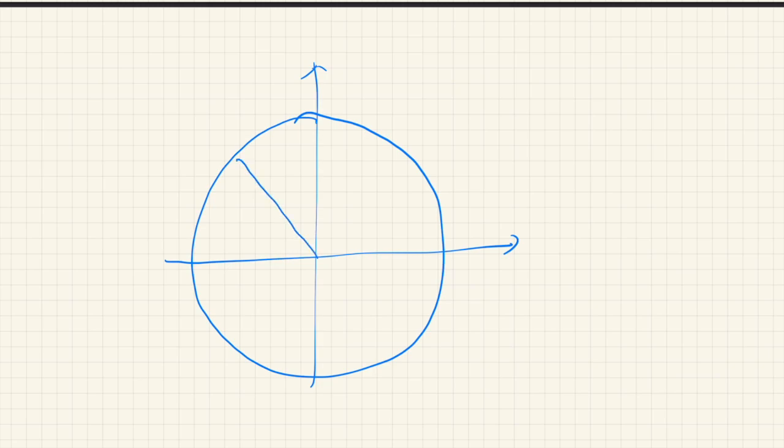Let's consider a unit circle. Unit circle means its radius is 1. And consider the angle of x. Since it's a unit circle, this length is sine x.